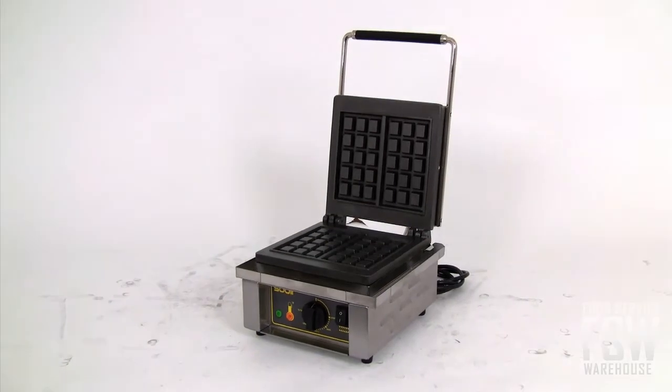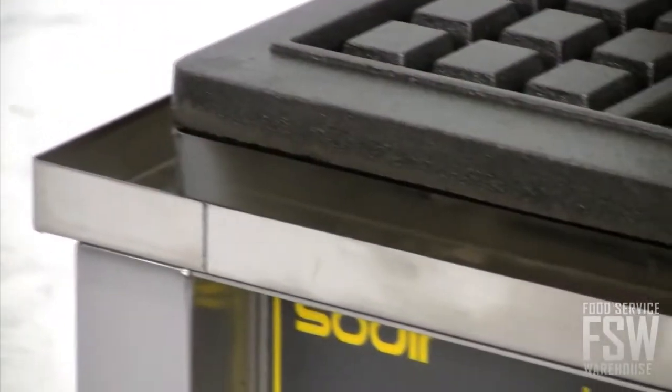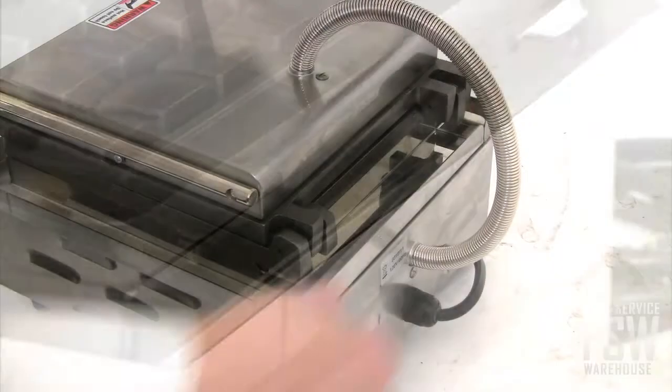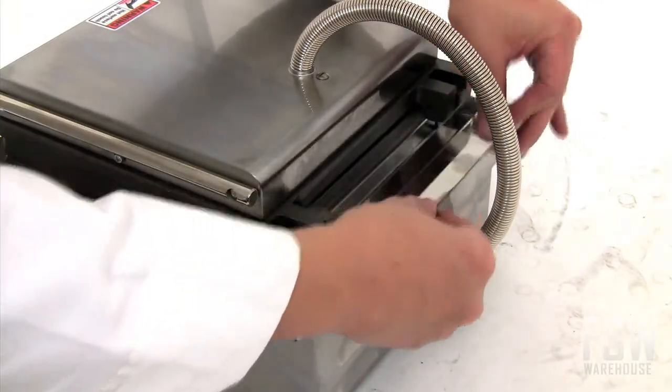A final benefit comes when the unit needs to be cleaned. This waffle baker features a wrap-around stainless steel drip tray that is removable for exceptionally easy cleaning.